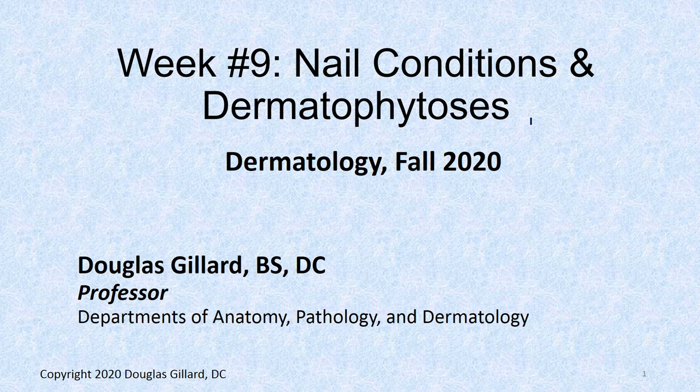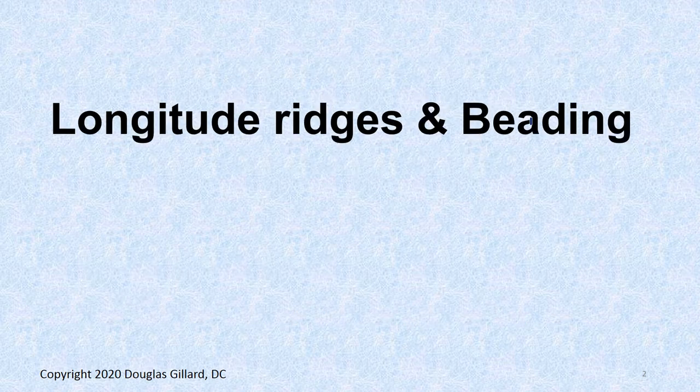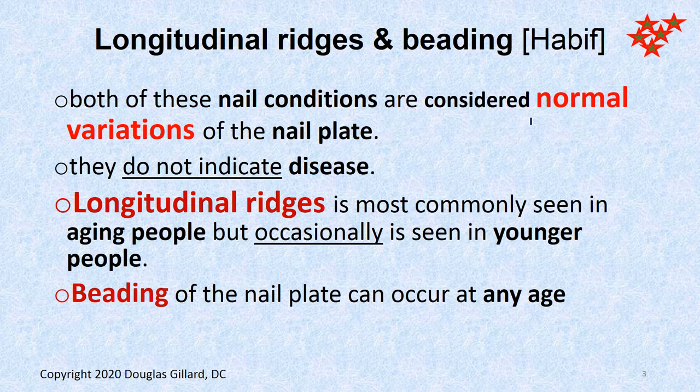Nail conditions. We're going to talk about dermatophytosis today, and we're going to get off of nail conditions a little bit as well. But some very common, normal nail conditions: longitudinal ridges and beading. Both of these nail conditions are normal variants of the nail plate — these are not a disease of any kind. Longitudinal ridges are seen in aging people; I actually have some of them myself. And beading can occur at any age.